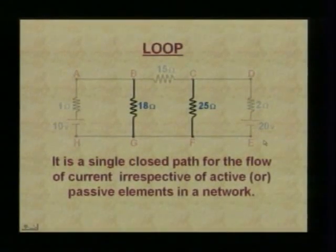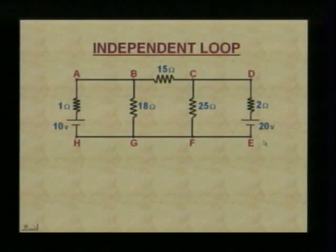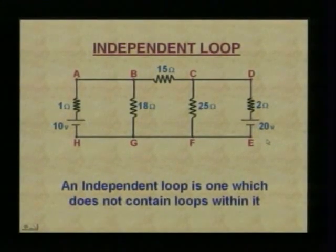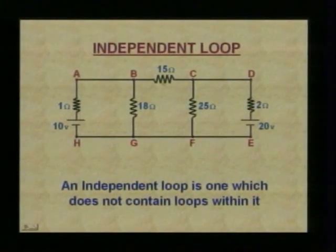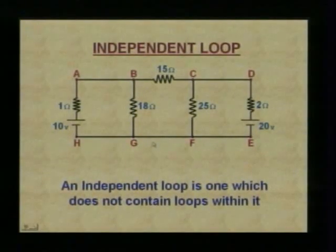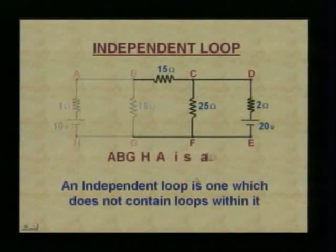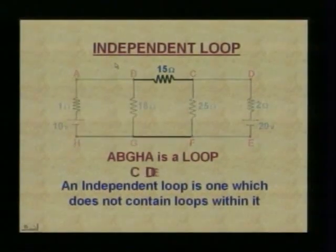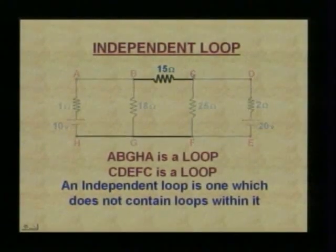Now let us talk about an independent loop. An independent loop is one which does not contain loops within it. In the previous example, the single loop had some internal loops. Whereas an independent loop does not have any loops inside it. A-B-G-H-A is an independent loop because it does not have any loops inside it. Likewise, C-D-E-F-C is another independent loop. These loops do not have any internal loop inside.